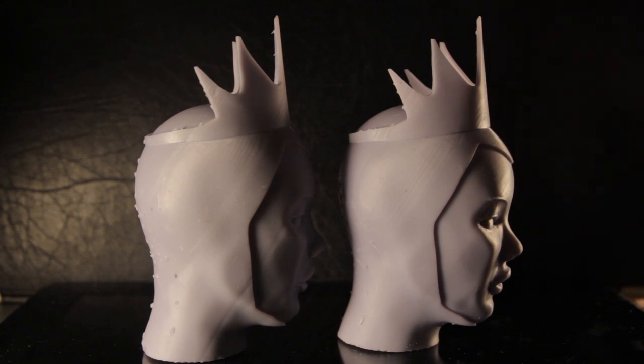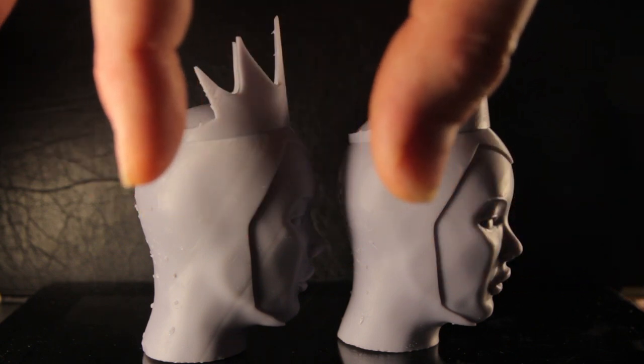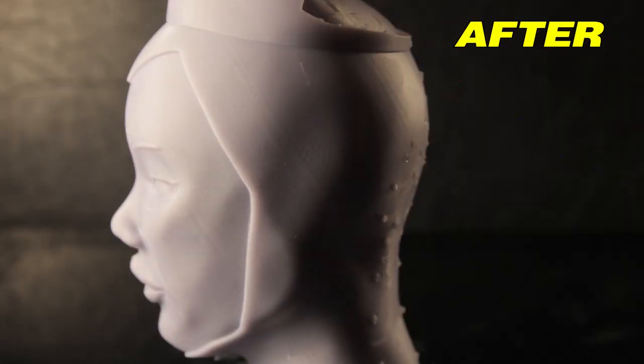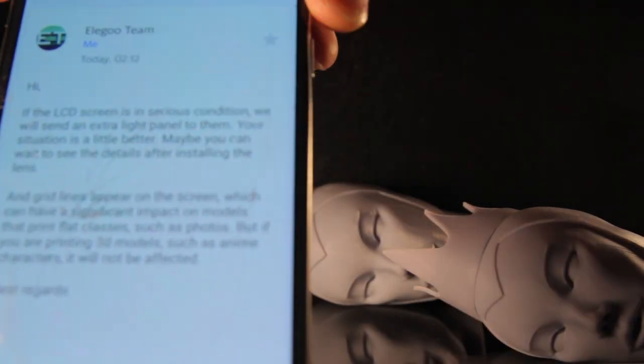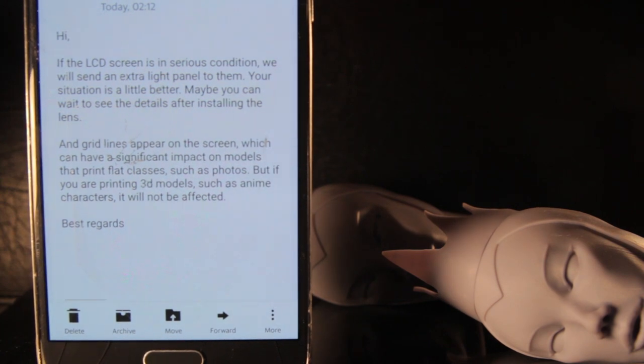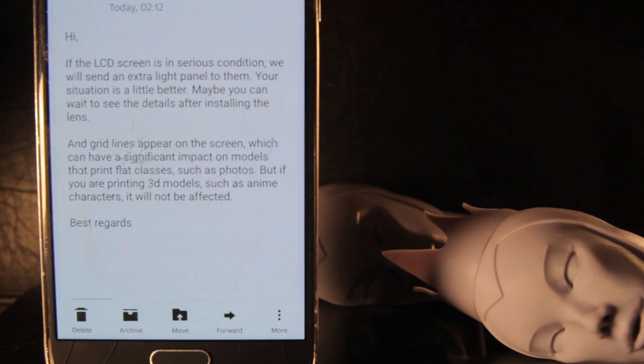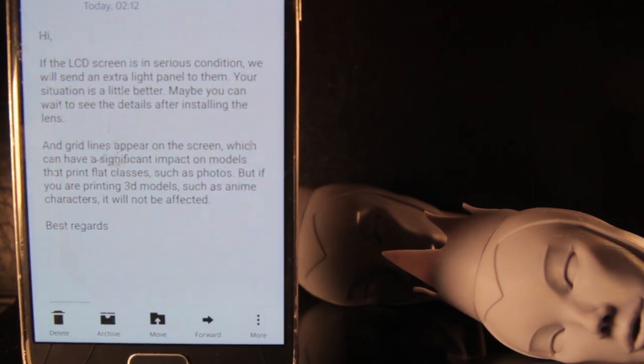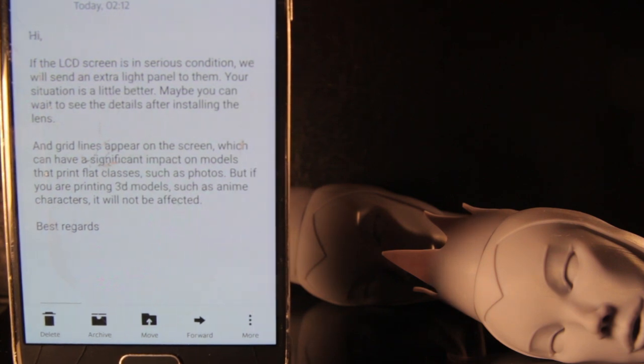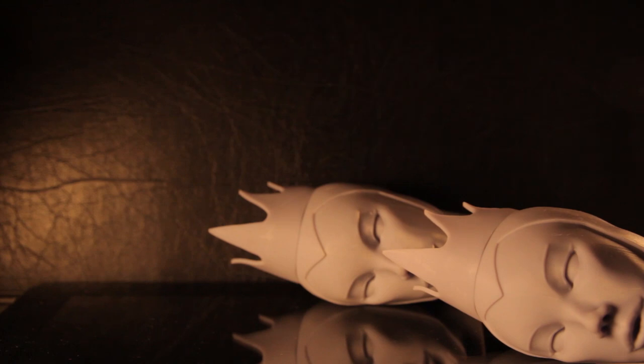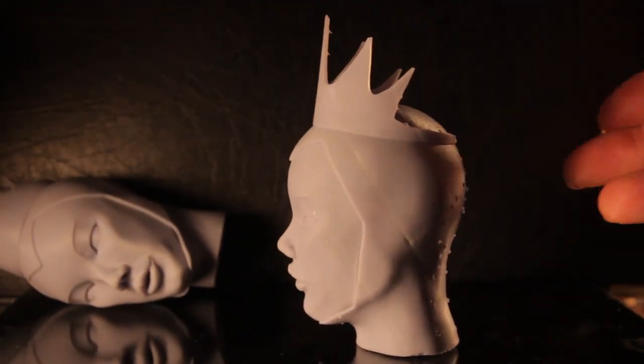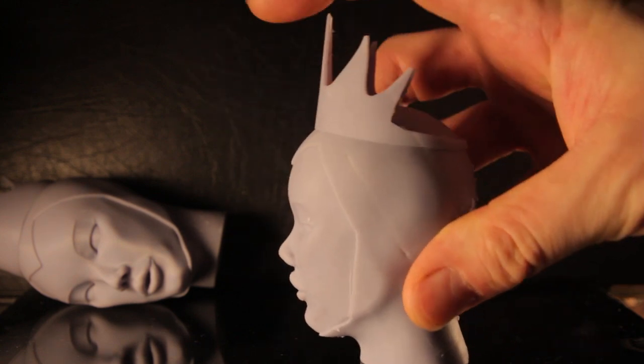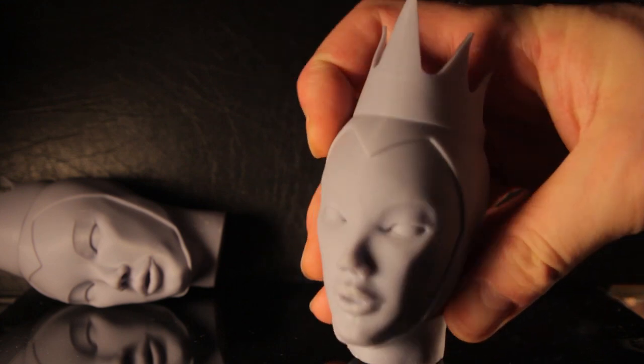There you have it. If you want to print without those weird lines and without the dots, you have to do a bit of sanding. I'm just going to do a direct comparison. Here you can read it for yourself from Elegoo. It says grid lines appear on the screen, which can have a significant impact on models that print flat classes such as photos, but if you are printing 3D models such as anime characters it will not be affected. So there you have it from Elegoo themselves. They're saying it will affect stuff. This printer will affect models. There is a design flaw in it.